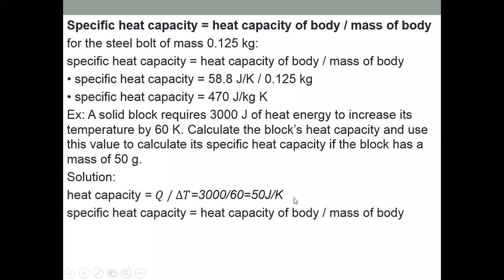Now find the specific heat capacity if the block has a mass of 50 grams. Convert 50 g to kilograms: 50 / 1000 = 0.05 kg. Specific heat capacity = 50 J/K ÷ 0.05 kg = 1,000 J/kg·K. This is another way to find the specific heat capacity of a material.